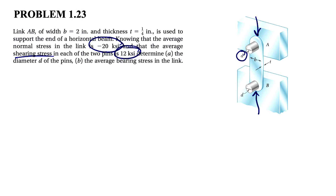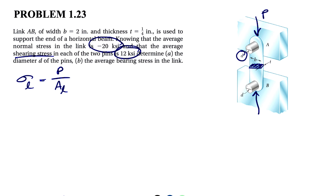We can start with the first given: the average normal stress in the link. We can write it as the force P divided by the area of the link. Since the link is in compression, the surface that will tolerate that stress is in the middle — that's the cross-sectional area we need to take into account. If the link were in tension, the area would be different, located where the pins are. The area here is simply B times T, the area of the rectangle. So the unknown is P.